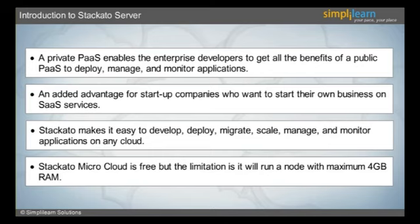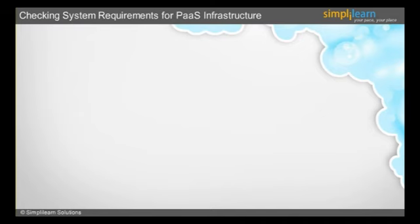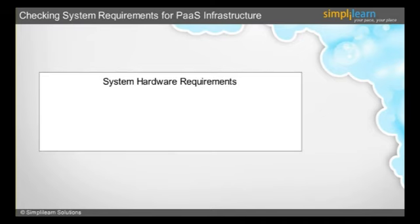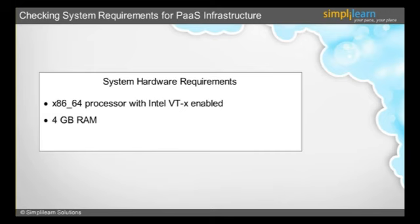In the next slide, we will look into the system requirements for running the PaaS environment. The minimum recommended server hardware requirements are an x86 64-bit processor with Intel BTX enabled or later, and 4 GB RAM. It also requires 100 Mbps or more LAN speed. It is essential to have a 64-bit processor to run this demonstration. If there are many users, RAM needs to be increased, as it is the high-priority requirement to ensure peak performance.